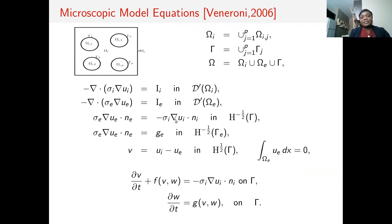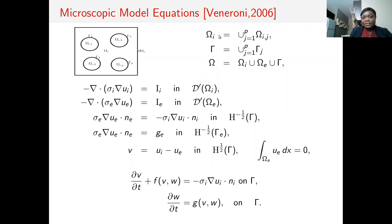This is actually the model. Here we consider a piece of cardiac tissue with P cells. Omega_I is the intracellular domain — that is, inside the cell. Gamma is the cellular membrane. Omega_E is the extracellular domain, which is the outside of the cell.